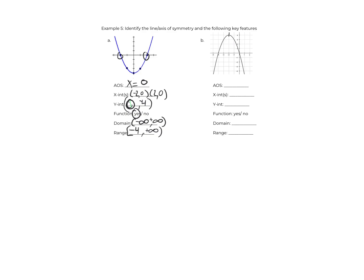Let's look at the next one. The axis of symmetry goes through the vertex — the turnaround point — so it is at x equals negative 2. The x-intercepts are at (−4, 0) and (0, 0), both two units away from negative 2. The y-intercept is also at (0, 0) — anytime one of your x-intercepts is (0, 0), that will also be your y-intercept. It passes the vertical line test, so it is a function. Domain: negative infinity to positive infinity. The range starts at the bottom, going up to positive 4, with a bracket since it is defined there.